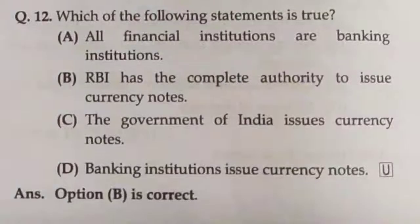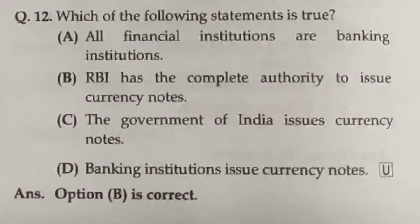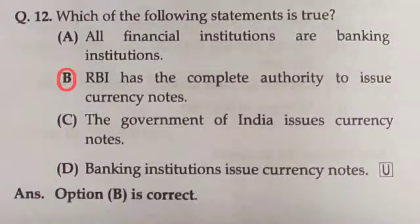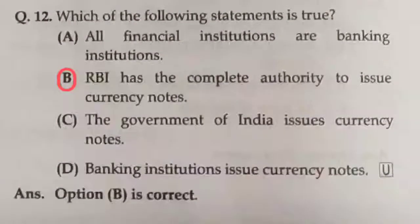Question number twelve: which of the following statements is true? All financial institutions are banking institutions — or — RBI has the complete authority to issue currency notes. That is correct. So the exact answer is RBI has the complete authority to issue currency notes. Option B is the correct answer.